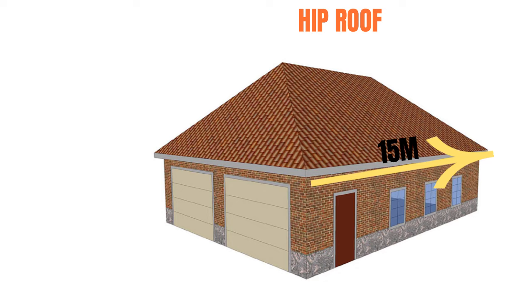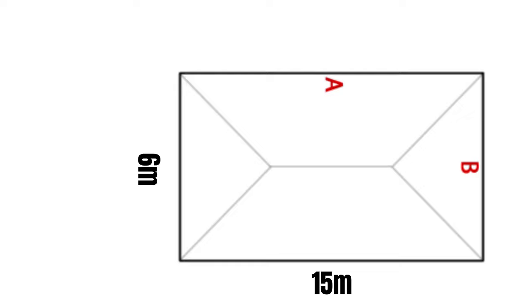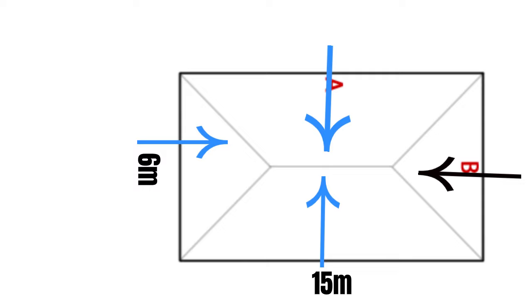From the plan, the hip roof is formed of 2 trapeziums and 2 triangles. The length and the width meet and make an angle of 90 degrees.